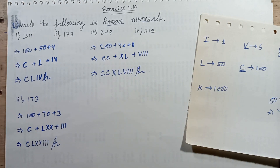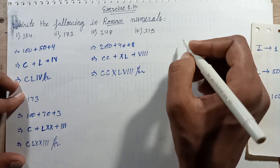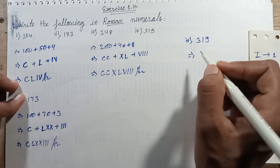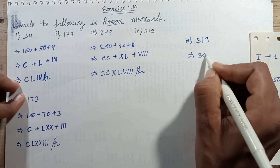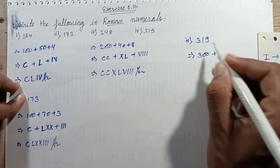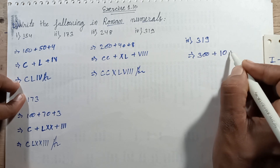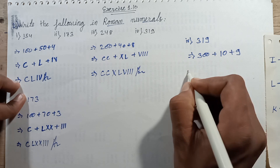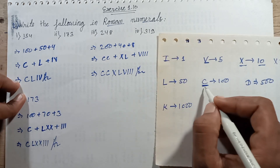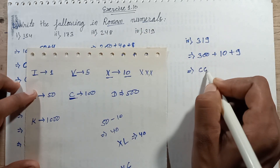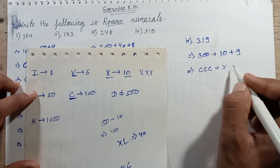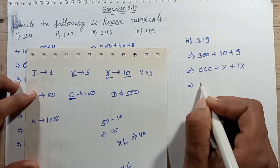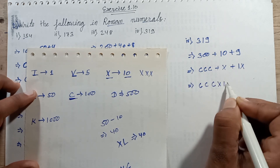Question number 4 is 319. This number, write in expanded form. 3 is in the hundreds: 3 multiplied with 100 equals 300. Then 1 multiplied with 10 equals 10. Plus 9: 9 multiplied with 1 equals 9. So 300 is 3 times C, plus 1 time X equals 10, plus 9 — since 10 subtract 1 equals 9. Assemble: 3 times C, 1 time X, 1 time I, and 1 time X — giving CCCXIX.